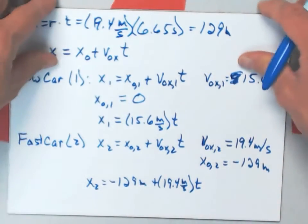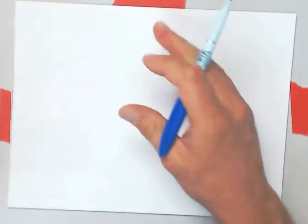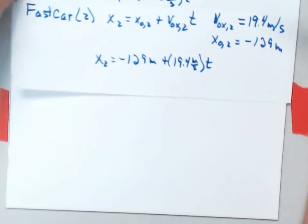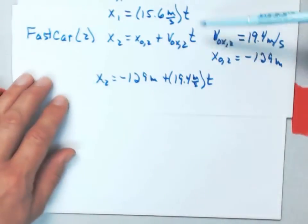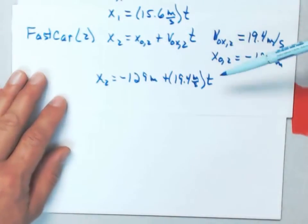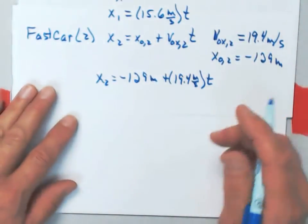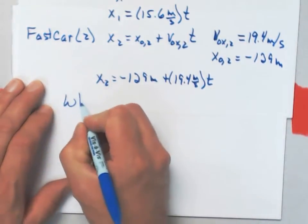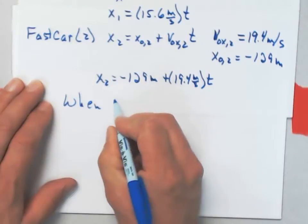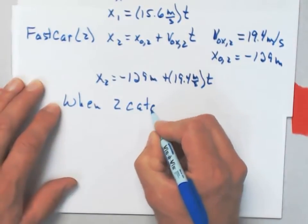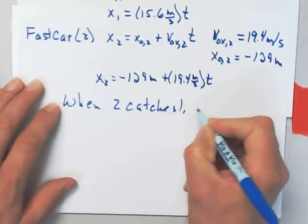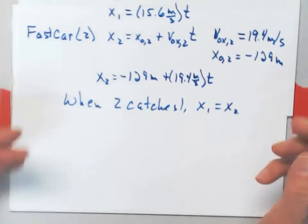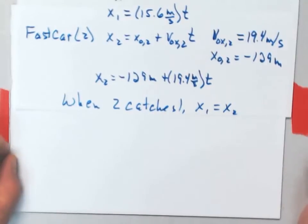So how do I solve this? Well, what I need to do is find where and when these two things happen to be at the same point. When car 2 catches car 1, here's what's going to be true. I'll have that x1 is equal to x2. That'll happen at some point in time.